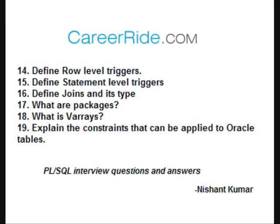Define joins and their types. A join is a query that extracts corresponding rows from two or more tables, views, or snapshots. Types: equi-join, non-equi-join, self-join, and outer join. Equi-join: information from two or more tables is retrieved using an equality condition. Self-join: a join that relates a table to itself. Outer join: fetches rows from two tables that match the join condition and also rows that do not match the join condition.